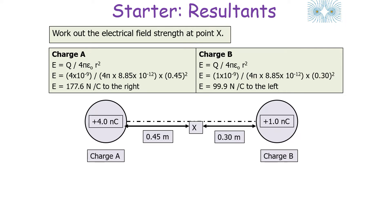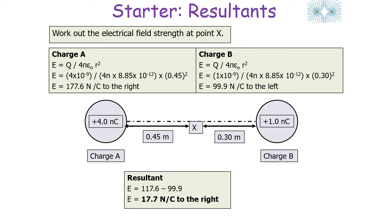Now for charge B, using the same equation E = Q / (4πε₀r²), with Q = 1×10⁻⁹ and r = 0.30 metres, we get an electrical field strength of 99.9 N/C to the left. To work out the resultant, we sum the two values — but because one acts to the right and the other to the left, we subtract one from the other. The resultant is therefore 17.7 N/C to the right.